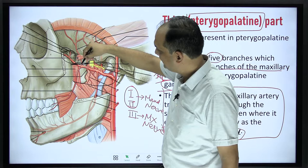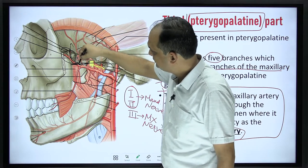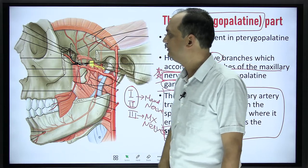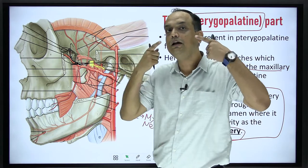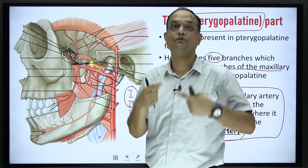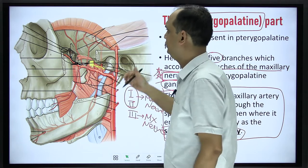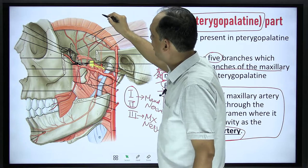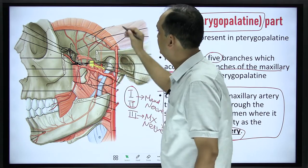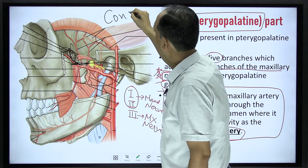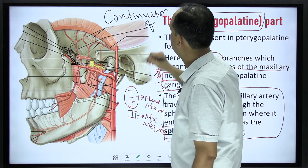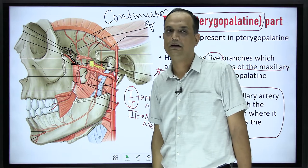This third part is taking a turn medially. This is the terminal portion of the artery which is going medially towards the nose and it enters into the nasal cavity as the sphenopalatine artery. So the question is: what does the sphenopalatine artery represent? The answer is that it represents the continuation — the continuation of the third part of the maxillary artery.